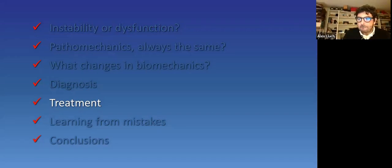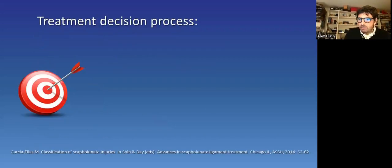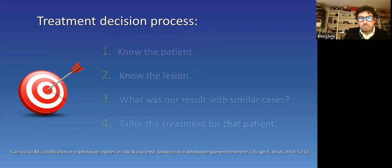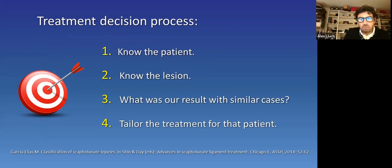Now, let me explain how we treat scapholunate dysfunctions. Our treatment decision process follows four steps. First, know the patient. Second, know the lesion. Third, have in mind what was our result in similar cases. And after that, four, tailor the treatment for each patient. I will explain the way we do it. So, I am not going to review all the possible surgical treatment options, many of them perfectly valid.